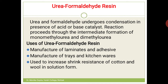Urea-formaldehyde resin is used for the manufacture of laminates, adhesives, kitchen wares, and trays. It is also used to increase the shrink resistance of cotton — cotton fabric shrinks easily, but adding urea-formaldehyde resin reduces its shrinking power.